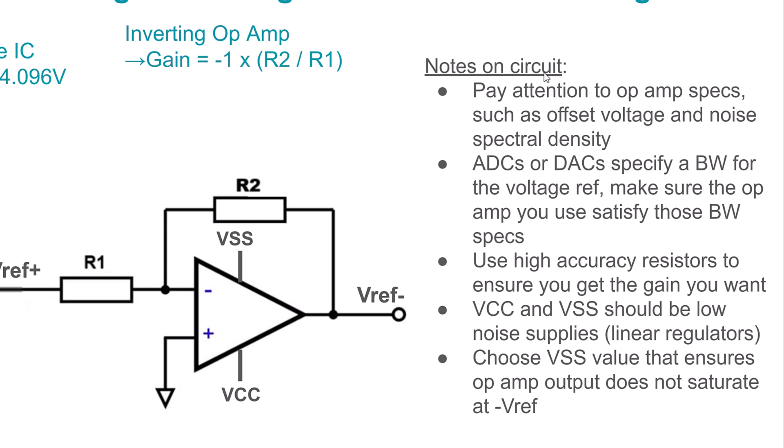For the power supplies, whether generated on the design or coming from elsewhere, ensure they are low noise, since power supply noise can get into the amplifier and onto the output signal. Also, choose VSS high enough to avoid saturating the op amp — even rail-to-rail op amps can only get within 100–300 mV of their supply rail. In our example, the most negative output is −4.096 V and VSS is −5 V, giving almost 900 mV of headroom, so saturation is not a concern.